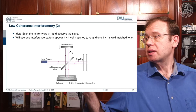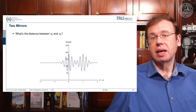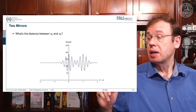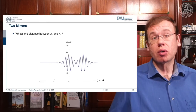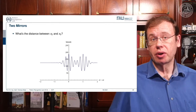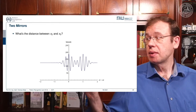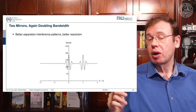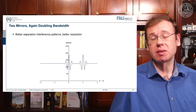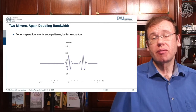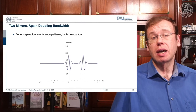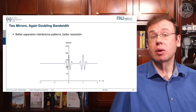The distance between detectable signals is governed by the coherence length. With a longer coherence length it may be difficult to differentiate the two signals, but with a shorter coherence length we can separate them better. Doubling the bandwidth gives better separation and better spatial resolution in our scanning approach.